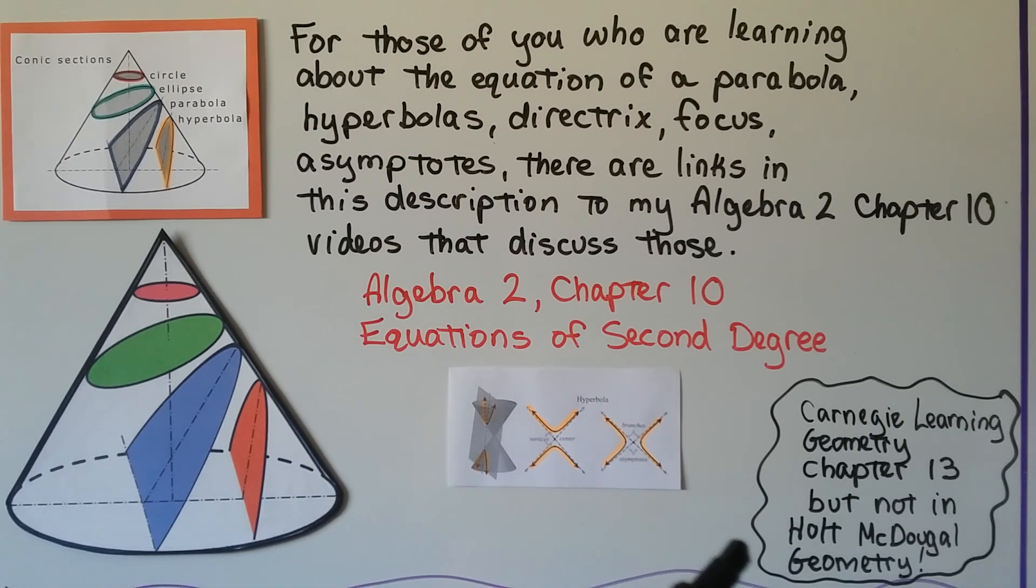If you're following me in the Holt-McDougall, it's not in this book. And you'll be learning about hyperbola, and vertices, and the center, and the branches. These are the branches of the hyperbola and the asymptotes. Those are the lines that are intersecting here. So know that you can just click on the description and go to those if you need to.